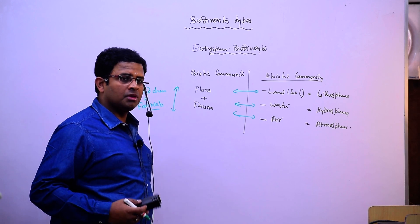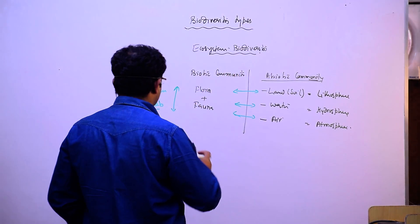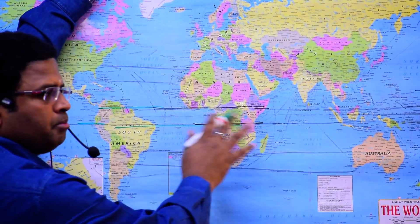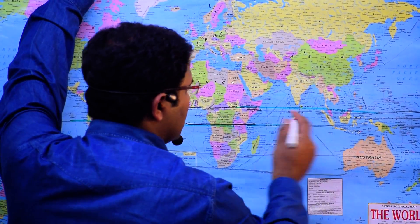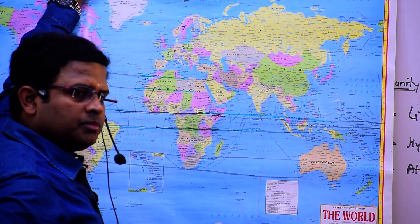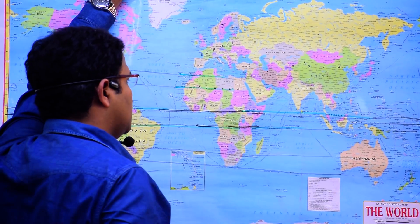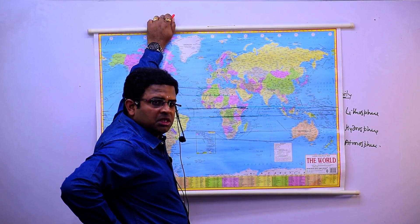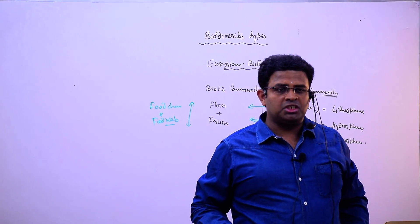An ecosystem is the interaction between biotic and abiotic community in the form of food chain and food web, as well as within the biotic community. The equatorial region has several plant and animal species interacting with temperature, rainfall, and soil — that is an ecosystem. The Sahara desert also has an ecosystem, but the plant and animal species differ due to changes in climatic character and vegetational structure.